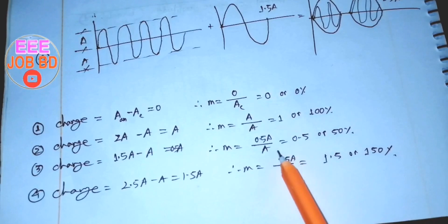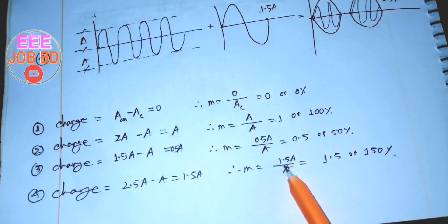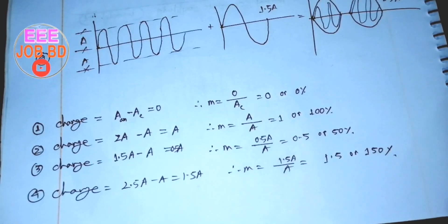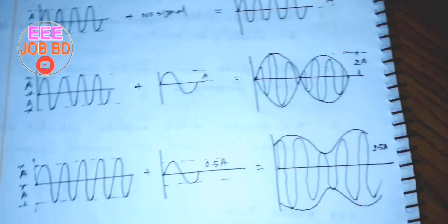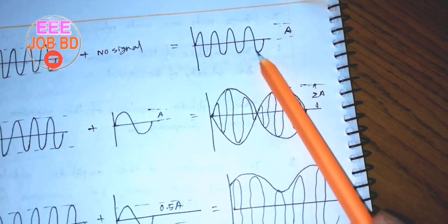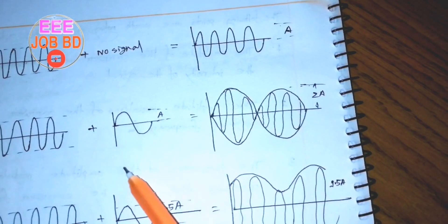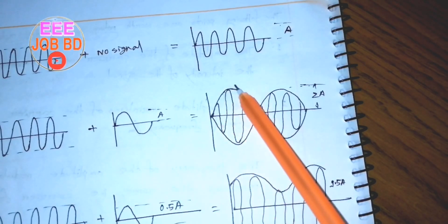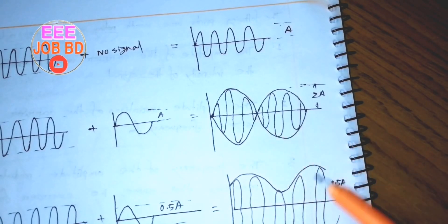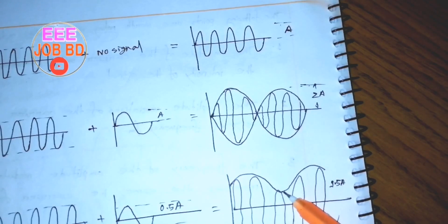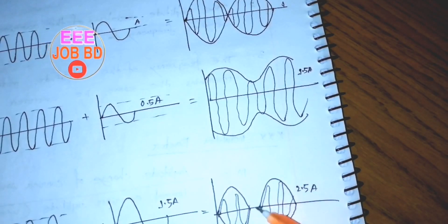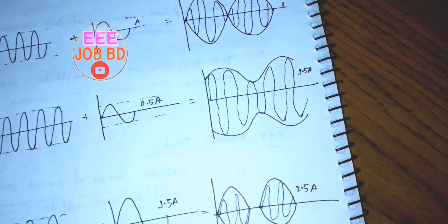We can see that the modulation factor is expressed as Em divided by Ec. This represents 100% modulation factor. When it is 0.5 or 50%, it is considered over-modulated, which causes distortion of the signal.